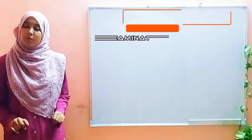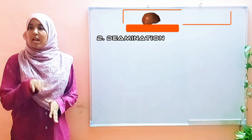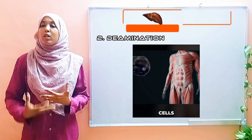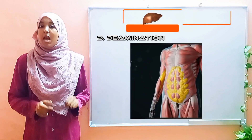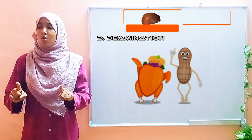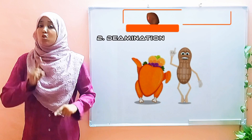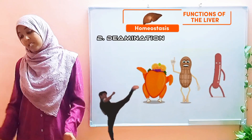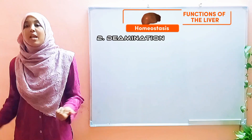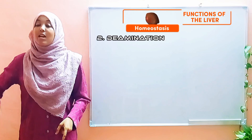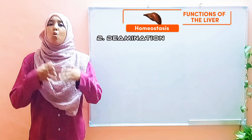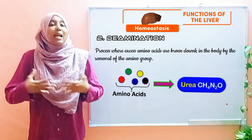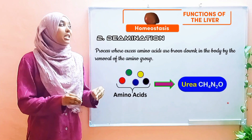Moving on to the next one: deamination. But before we get into deamination, I want to mention this. When we consume excess carbohydrates, our body takes whatever it needs and the excess is stored. But when it comes to proteins, our bodies do not have a storage mechanism for excess proteins. So when you consume more than what you need, the excess amino acids are simply eliminated from your body. This is done through a process called deamination.